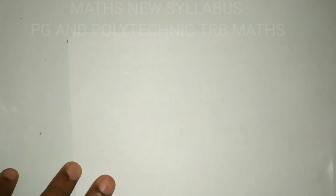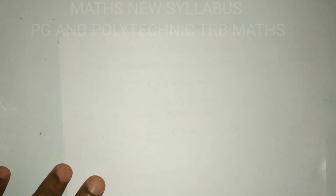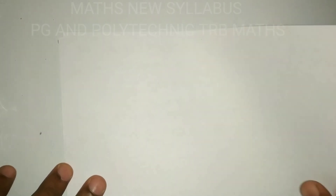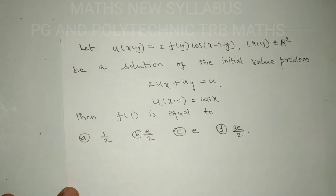Anayi virukkum manakkam. Now, for the PGN Polytechnic TRB exam, let us look at an important problem on partial differential equations. Let u(x, y) equal to 2 times f(y) into cos(x − 2y) for all x, y belonging to R².